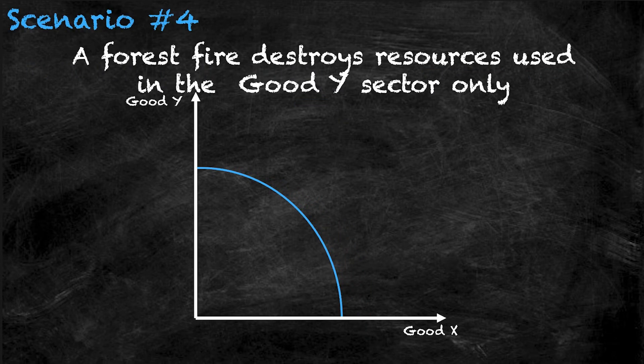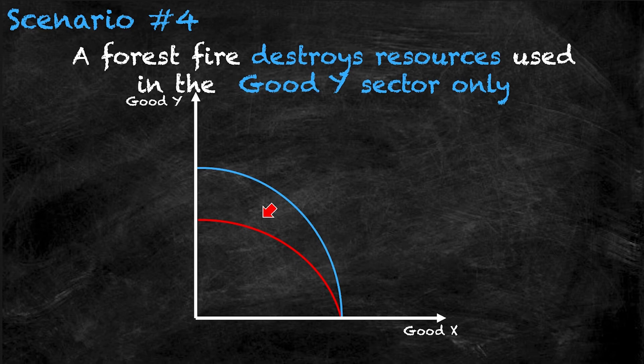Scenario four: a forest fire destroys resources used in the good y sector only. A forest fire is a negative shock, so the PPF is going to move to the left. However, the good x sector is not impacted — only the good y sector. So the y-intercept changes but the x-intercept remains the same, and we pivot once again. This means our economy can make less of good y but the exact same amount of good x as before the negative shock, since only the good y sector is impacted.